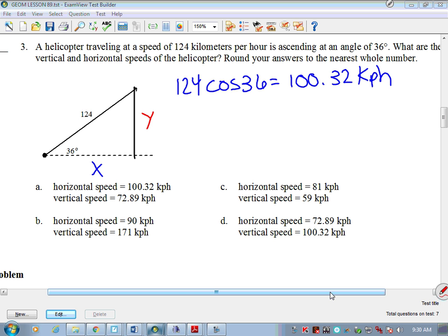Now let's look at y. Now the nice thing about this is that I can tell you that we're going to use 124 sine 36. You get doing this enough, you're like, okay, I know we're going to get y over 124, and then I'm going to multiply by 124 on the other side so long as y comes out on top. What's 124 sine 36? 72.89 kph. So that is our vertical speed. So vertical and horizontal. What is our answer here? A.